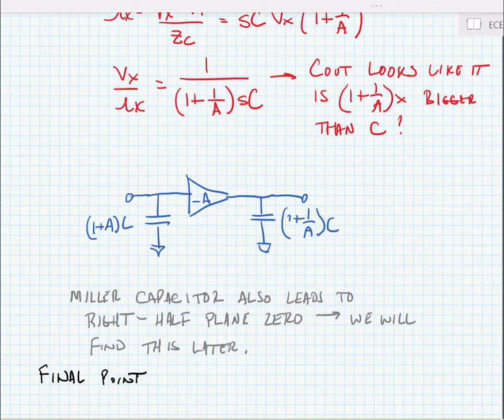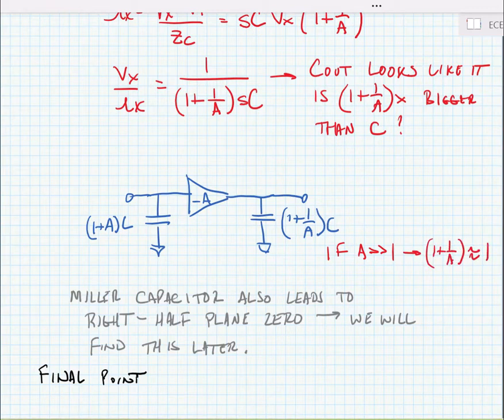We won't have to use a small signal model any longer. Now it's worth noting if A is much, much bigger than 1, then 1 plus 1 over A is approximately equal to 1. So at the output, at least, if the gain is very large, the capacitance is pretty close to the value of the extrinsic capacitor value.